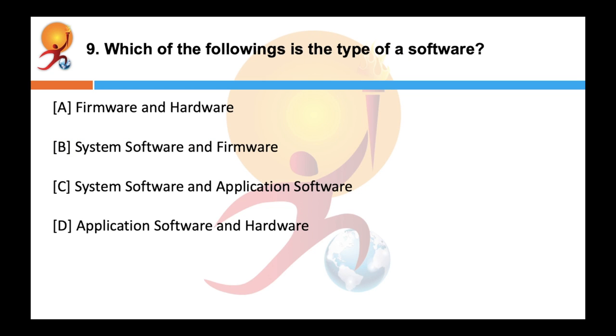Which of the following is the type of a software? Correct answer is C system software and applications. Softwares can be grouped into few broad categories like application software, system software, malicious software, etc.